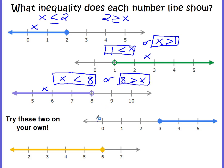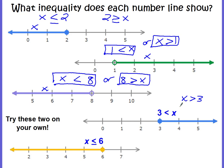I'd like for you to work the next two on your own. Pause the video and come back and check your answers. Did you say that 3 is less than x, or x is greater than 3? Either one of these would be correct. In our second example, did you say that x is less than or equal to 6? Remember, the circle is filled in, so it has to be equal to. And I made a mistake up here — that circle is filled in, so it really should be 3 is less than or equal to x, or x is greater than or equal to 3. I hope you caught that.